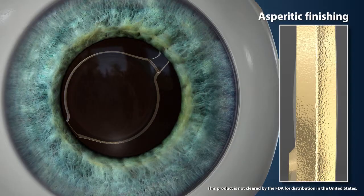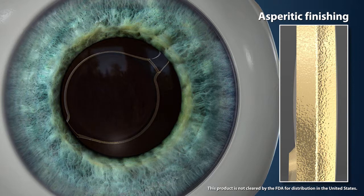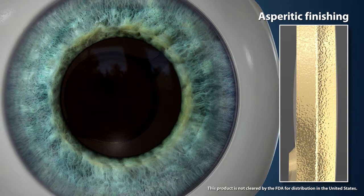Asperitic finishing incorporated into the Actis SP lens edge reduces the risk of glare-causing lens edge reflections under mesopic conditions.